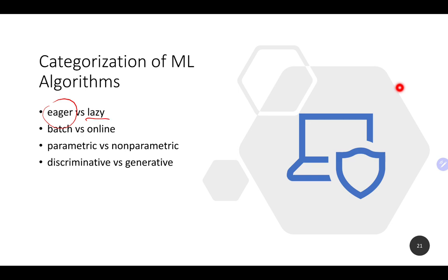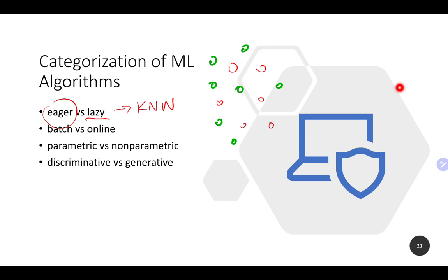Lazy learning is different — there is no real training phase. The algorithm has a procedure for what to do on the data, but it doesn't learn anything from training. There is only testing: when a new data point comes in, it just makes a prediction. A very good example is K-nearest neighbors. There are data points in the system representing two different classes.